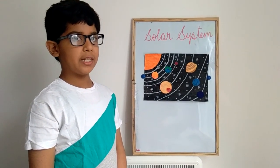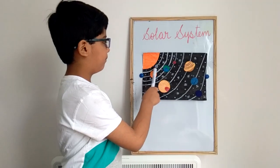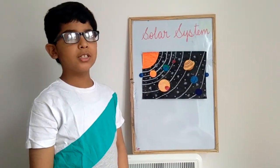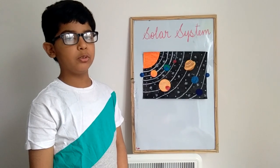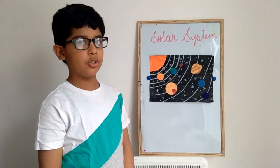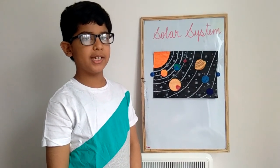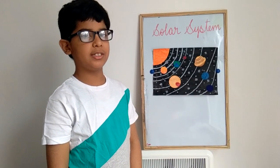The first planet is Mercury. This is Mercury. Mercury is the closest planet to the sun and all the planets. It has no atmosphere and no moons. It is the rockiest planet in our solar system.